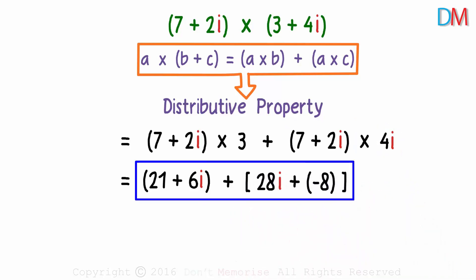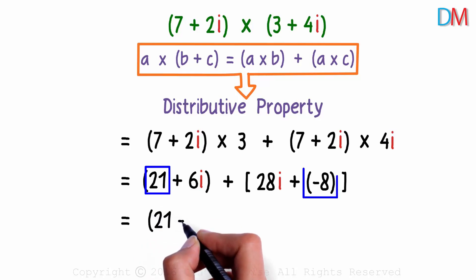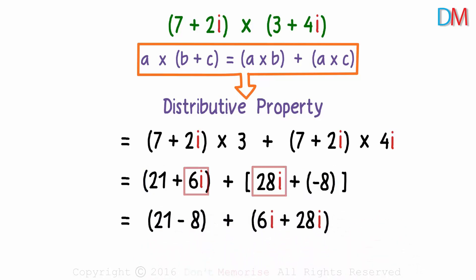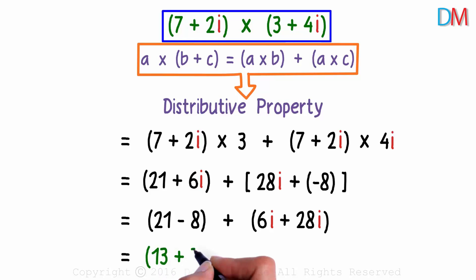This expression equals the product of these two complex numbers. To get the final expression, let's add the real parts and the imaginary parts separately. We get the real part as 21 minus 8 and imaginary part as 6i plus 28i. Hence, 7 plus 2i multiplied by 3 plus 4i gives us 13 plus 34i.